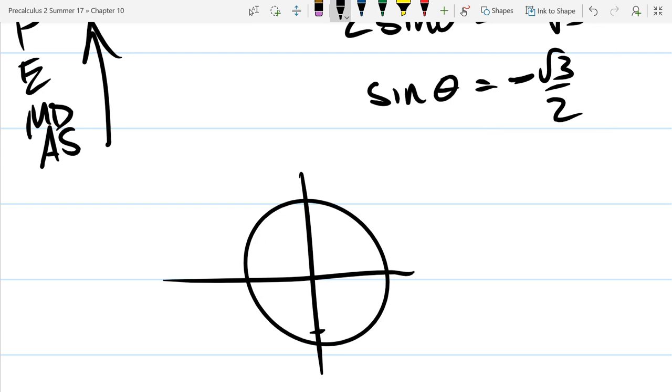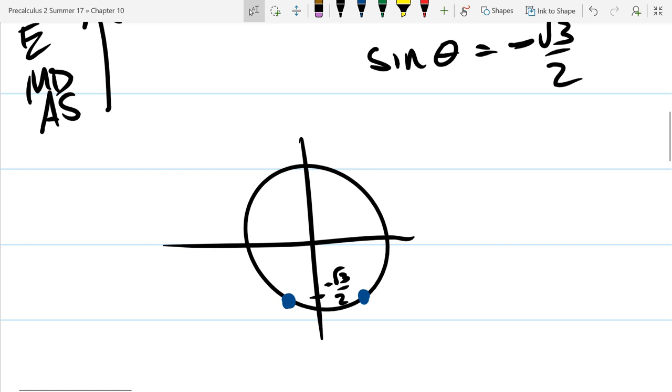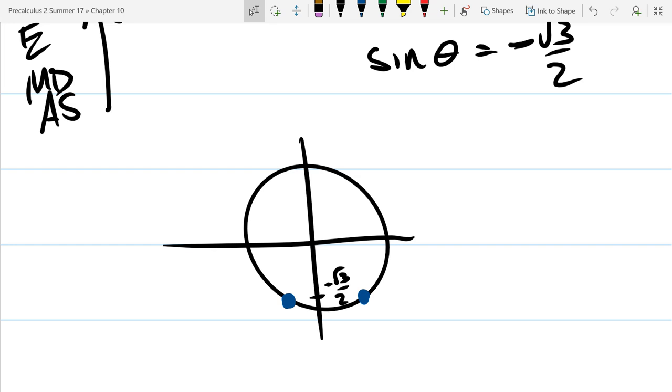So it's down here, negative square root three over two. And there's going to be two points on the unit circle that have this y-coordinate. They're right here. Again, I'm worried about the y-coordinate because I have a sine function.